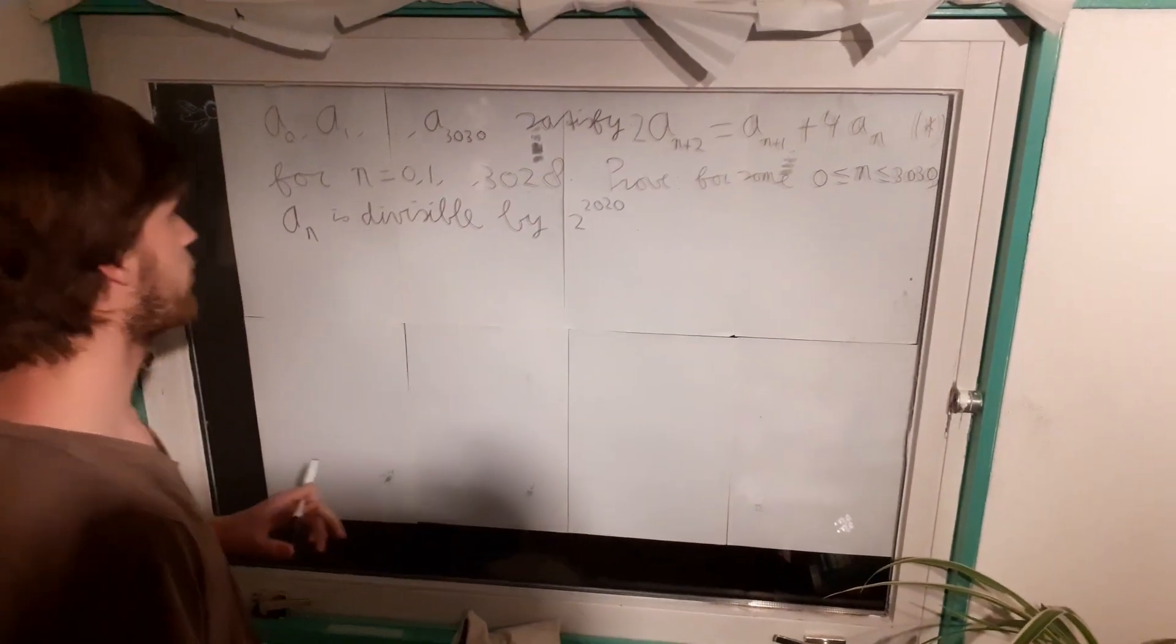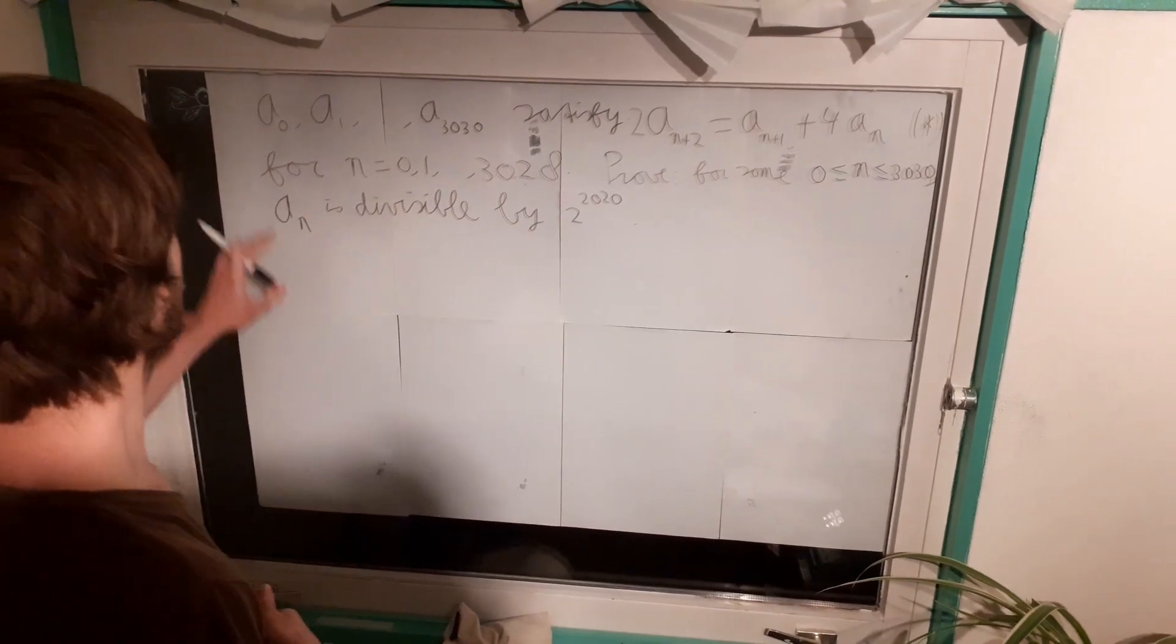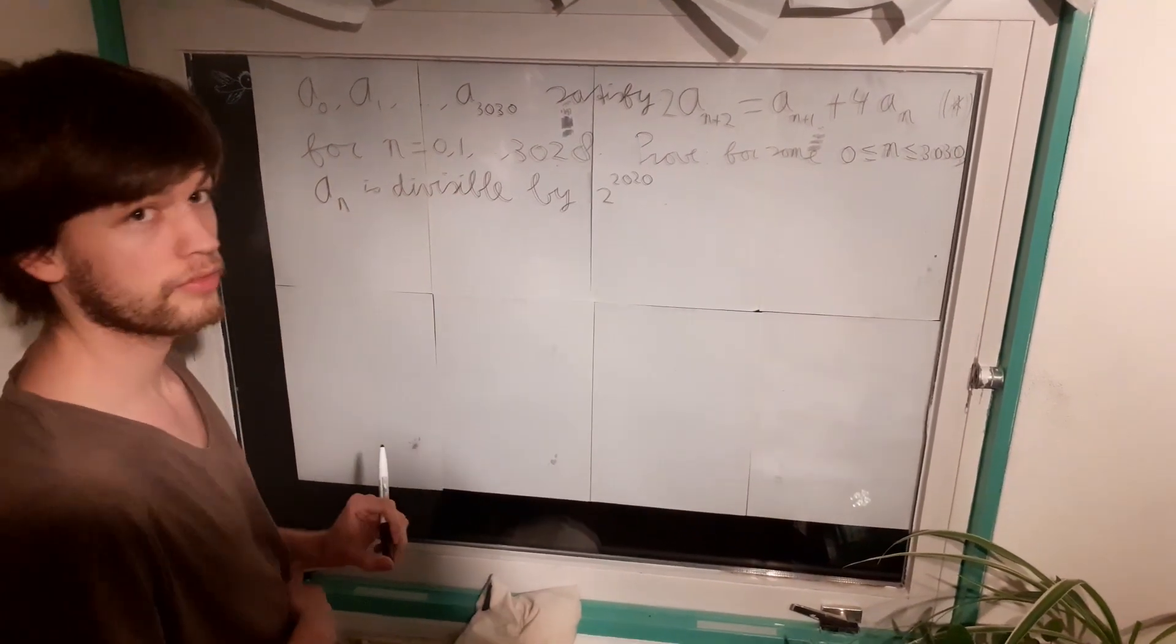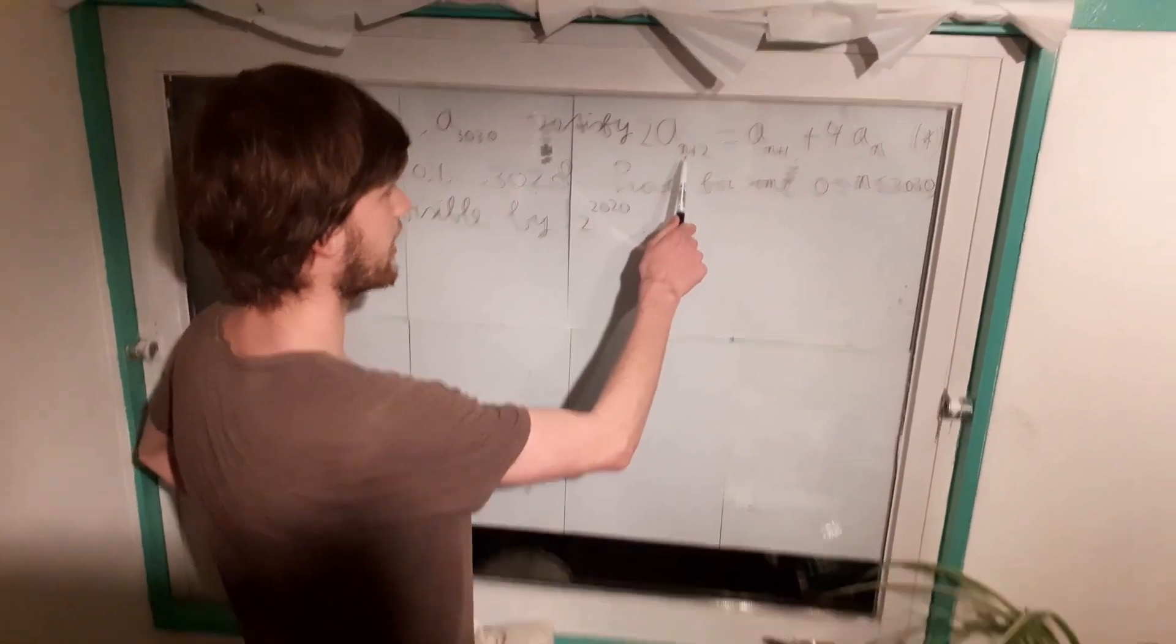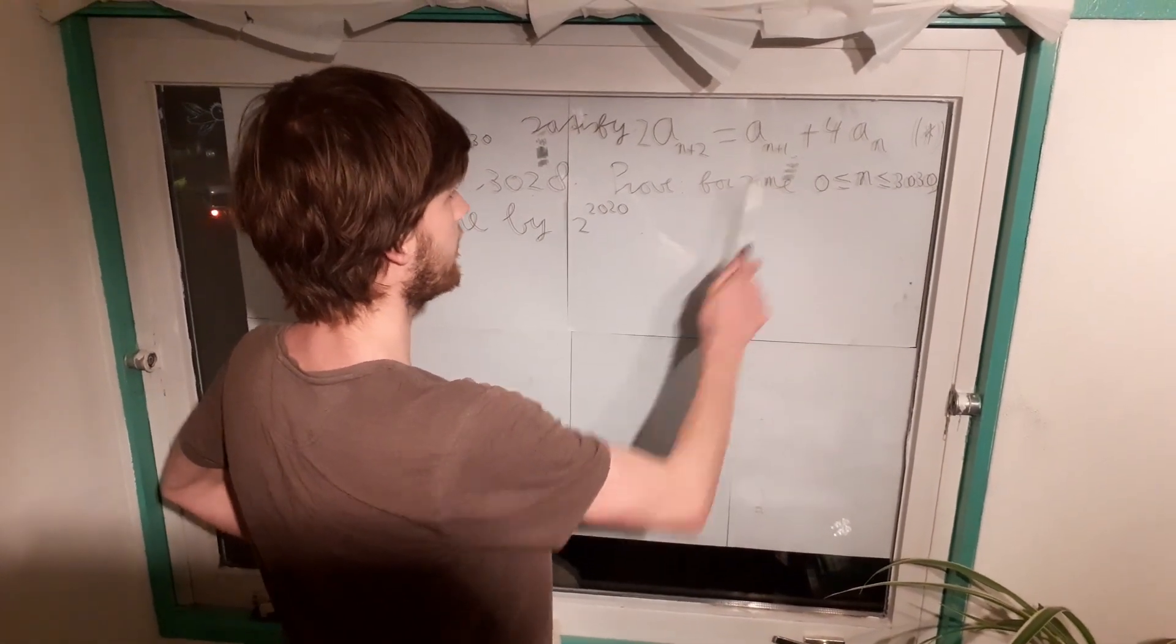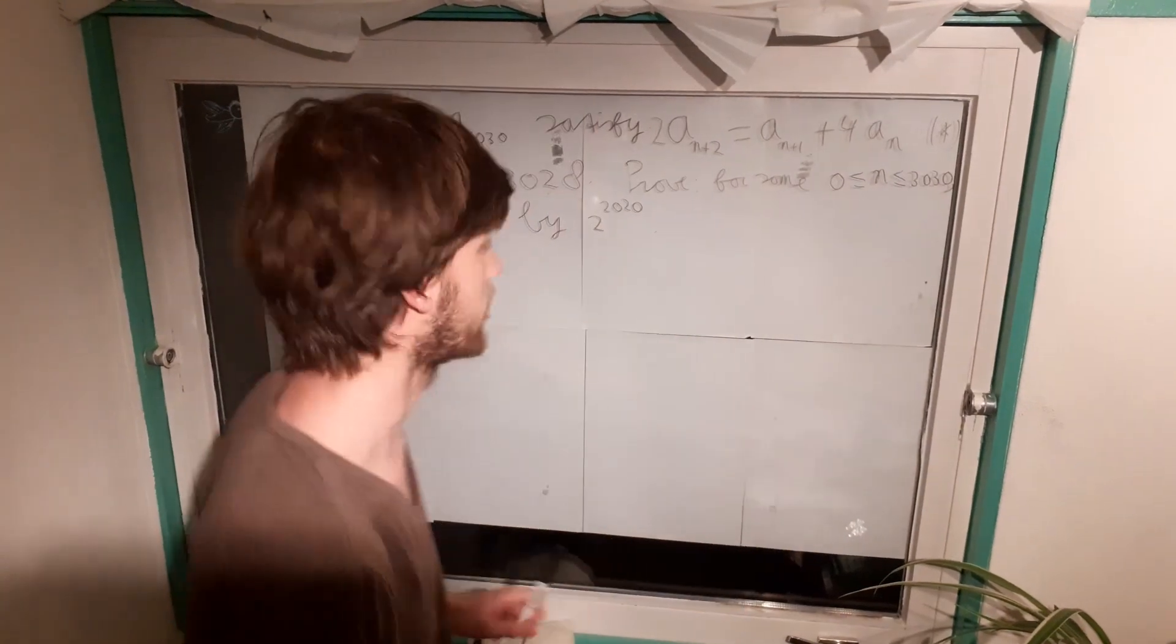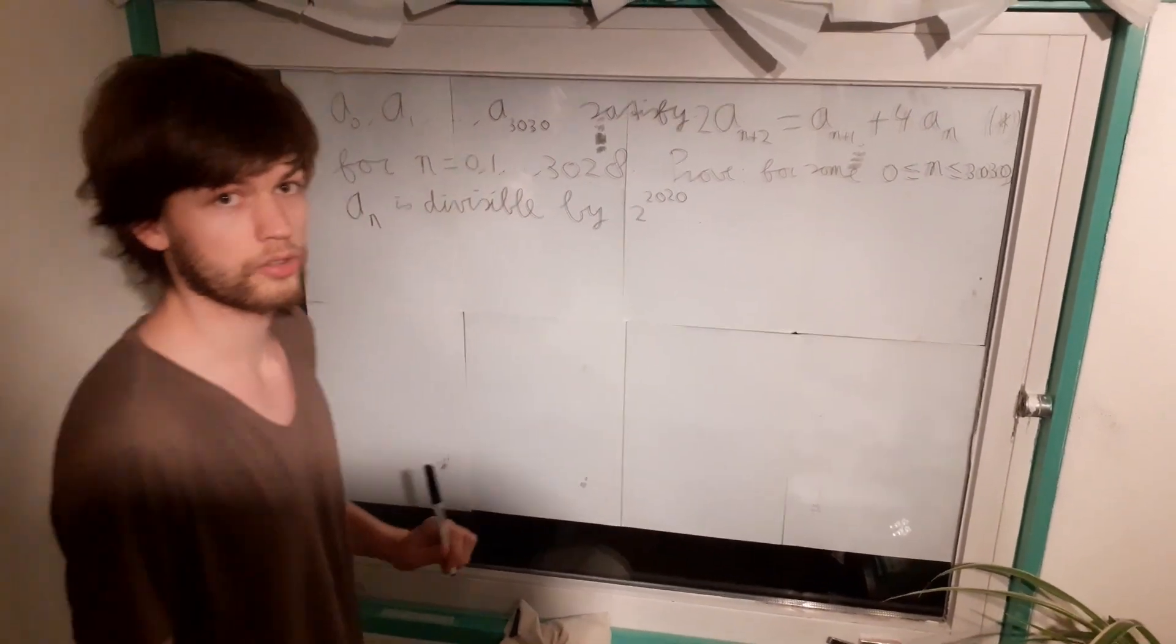Okay, so we are going to start at problem 1. I have written a statement down here on this window. We have positive integers a0, a1, up to a3030 and they satisfy the relation 2a_{n+2} equals a_{n+1} plus 4a_n. And this holds for all n from 0 up to 3028.